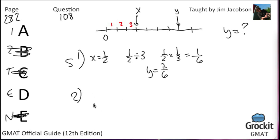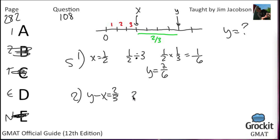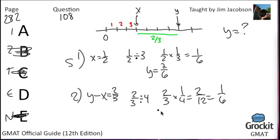Statement 2 says Y minus X equals 2/3. The distance from X to Y spans 4 equal intervals, so each interval equals 2/3 divided by 4, which equals 2/12 or 1/6. Each mark is again 1/6, so Y equals 7/6. Statement 2 is also sufficient; the answer is D.